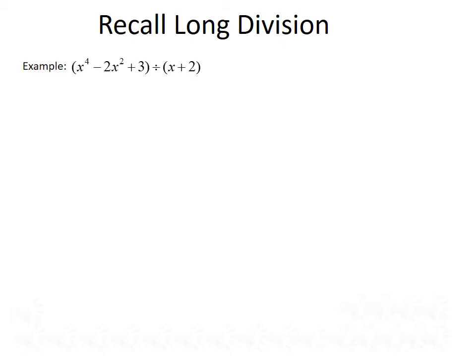Let's do another example. This time we want to divide x to the fourth minus 2x squared plus 3 by x plus 2. We're missing terms in our dividend, so we'll have to use zeros to hold their places. Writing this out using the division sign, we have x to the fourth plus 0x cubed minus 2x squared plus 0x plus 3 under the division sign, and x plus 2 as our divisor outside.